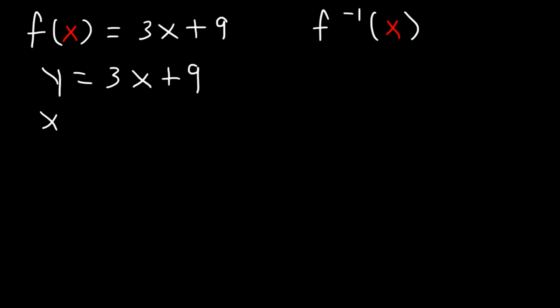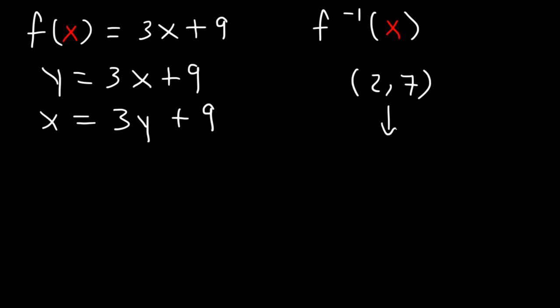Next, switch x and y. So you need to understand what the inverse function is. If you have the point (2, 7), the inverse point is (7, 2). All you need to do is switch x and y — those points are inverses of each other. So once you switch x with y, go ahead and solve.